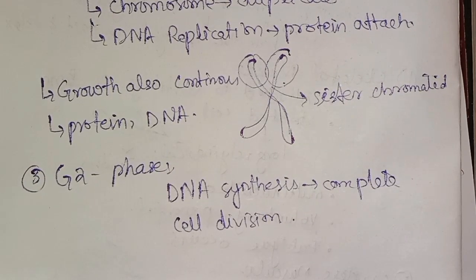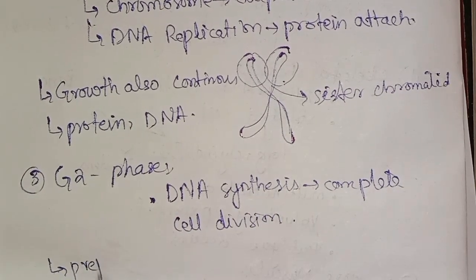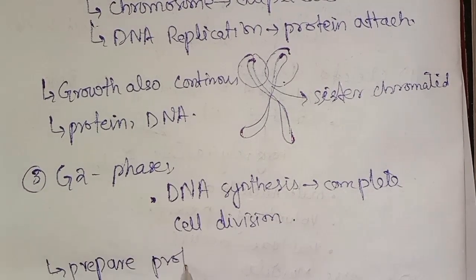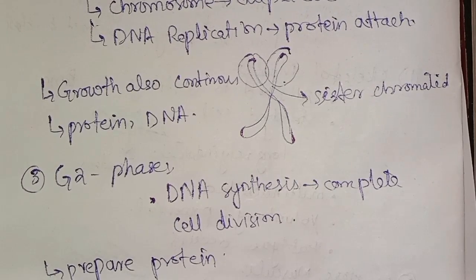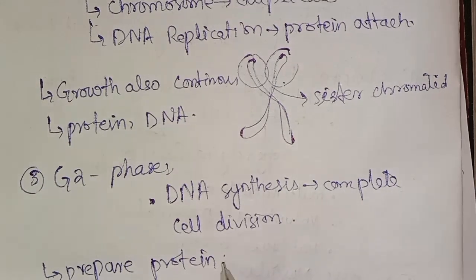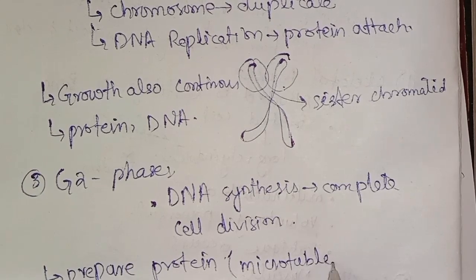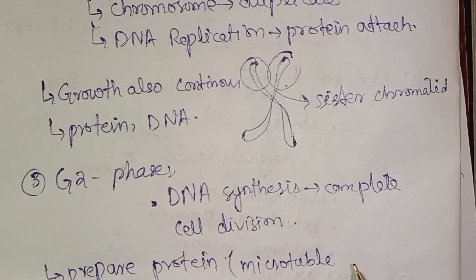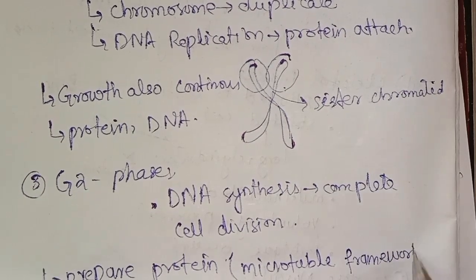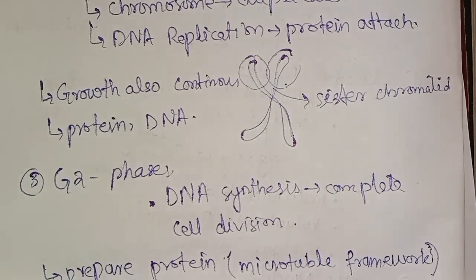During G2 phase, the cell prepares proteins needed for cell division — for example, proteins for the cytoskeleton and microtubules, which are involved in cell maintenance and cell shape.